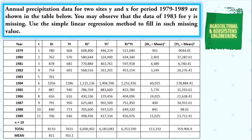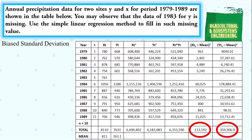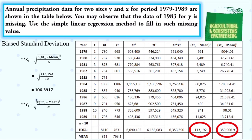After filling out the necessary values in the table, we now solve for the biased and unbiased standard deviation. The values we will need for getting the missing data are the unbiased standard deviation values. However, it is still necessary to compute the biased standard deviation. We begin with the biased standard deviation using the values encircled in red. Substituting the values, we have the square root of 113192 over 10, giving us Sx of 106.3917. Next, substituting for Y, we have the square root of 359906.9 over 10, giving us Sy of 189.712.